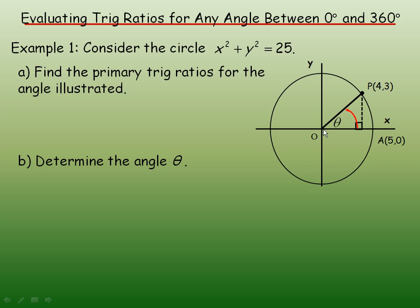So this circle has a radius of 5. We see that A is the point here, 5, 0. And so we have a point located on the circle, the point 4, 3.